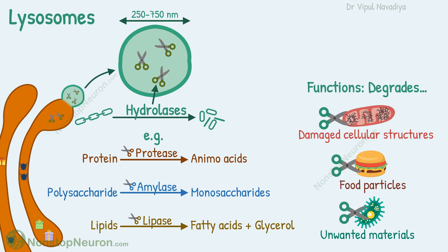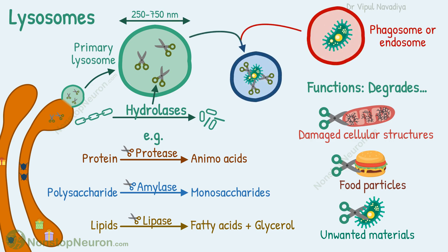Recently, lysosomes are found to be involved in secretory functions as well. Freshly formed lysosomes, which are still waiting for their targets, are called primary lysosomes. Basically, these lysosomes are inactive. Once they fuse with a phagosome or endosome and start digesting things, they are called secondary lysosomes.